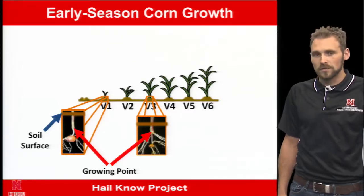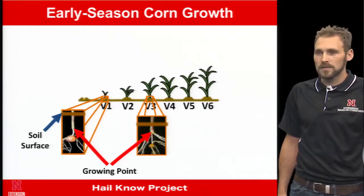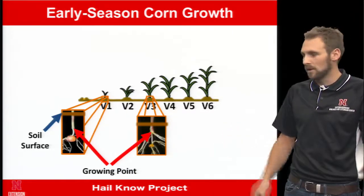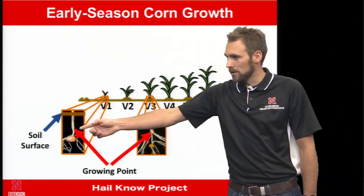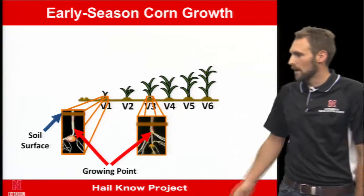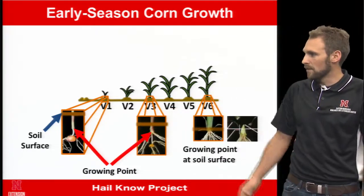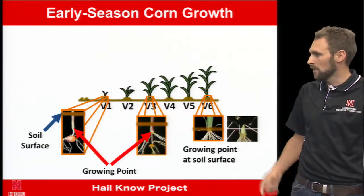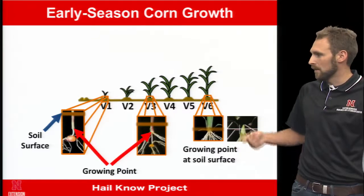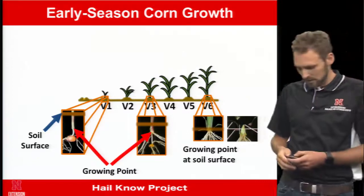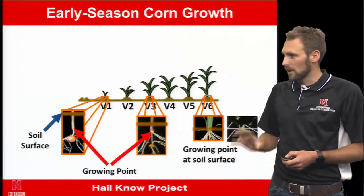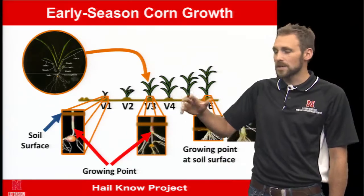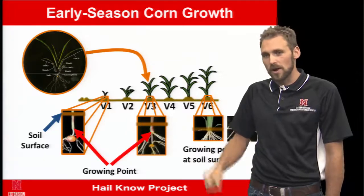Corn early in the season is fairly resilient to hail damage because its growing point is below the soil surface. From planting through about V6, the growing point remains roughly three-quarters of an inch below the soil surface, even through the V3 stage. By V6, which is when we start accounting for leaf defoliation above ground, the growing point reaches the soil surface and from there remains above it. Prior to this, they're not going to account for any leaf defoliation. At early stages, corn doesn't even have a full stalk yet — it's actually just the leaf sheaths holding the plant upright.